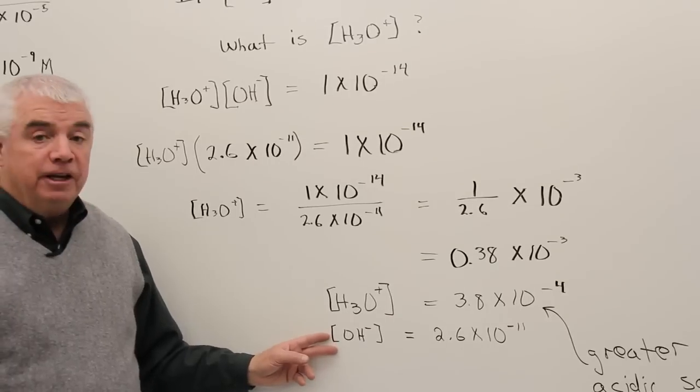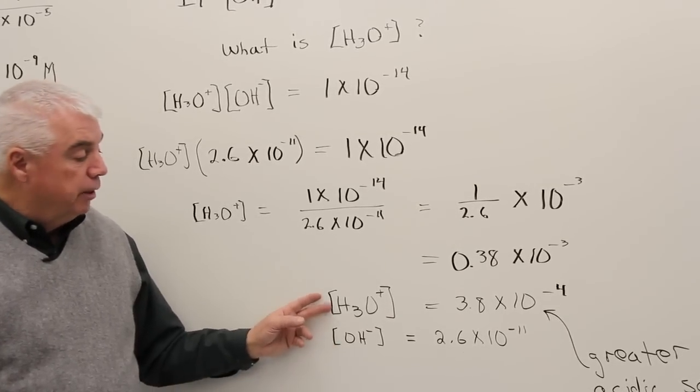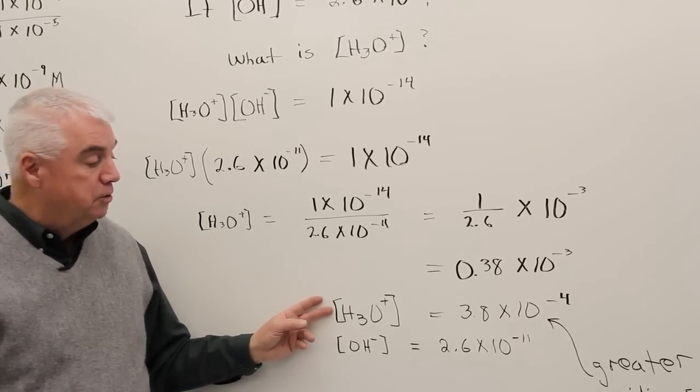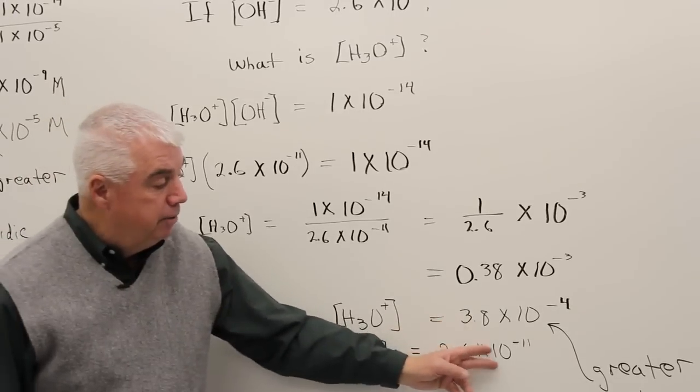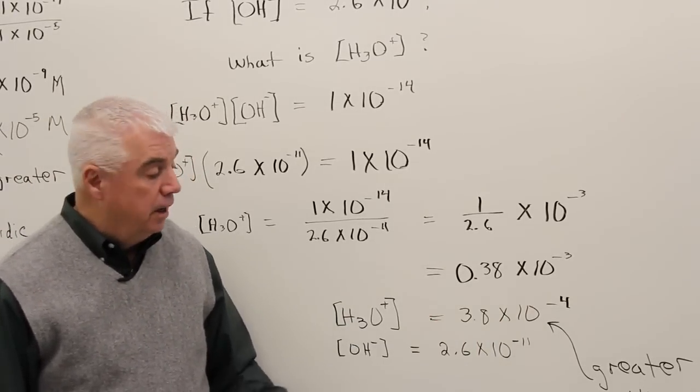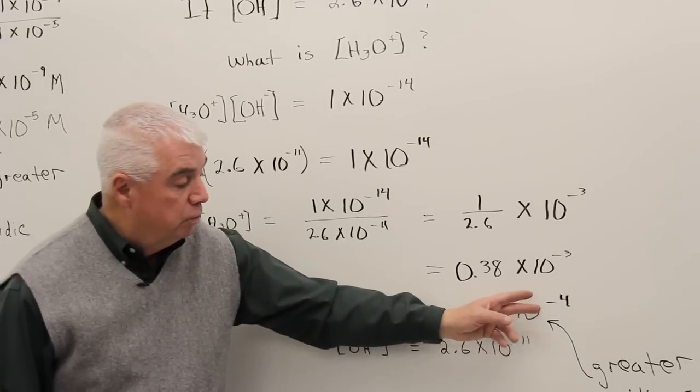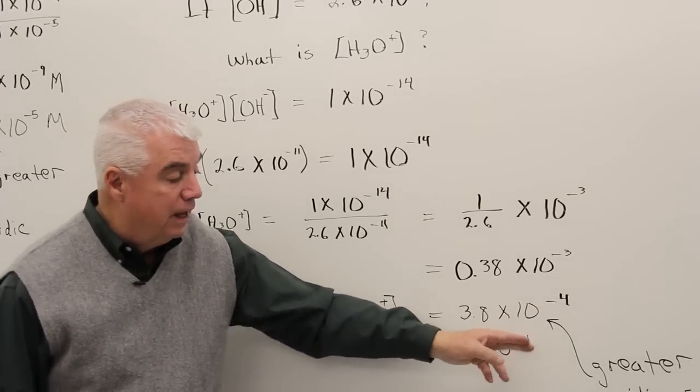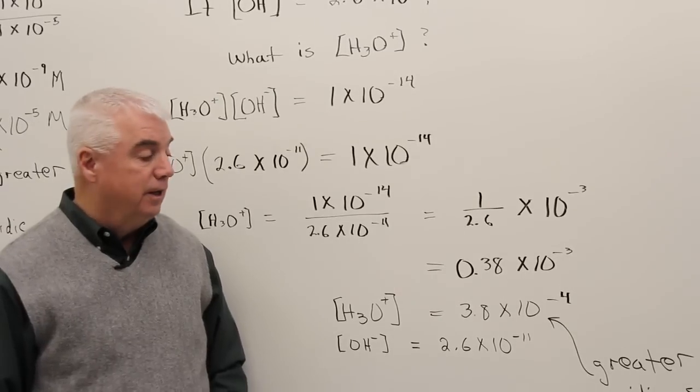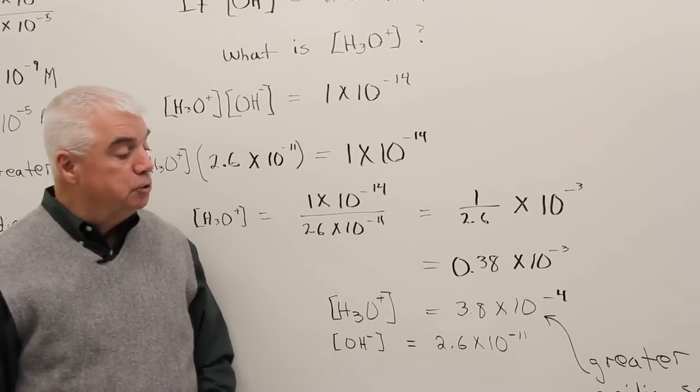Here was our given OH- concentration, comparing that to the H3O+. Again, because these are negative exponents, we'd look for the smaller number. That's the greater concentration. And again, the solution is acidic.